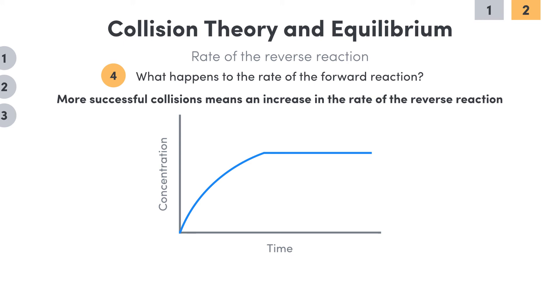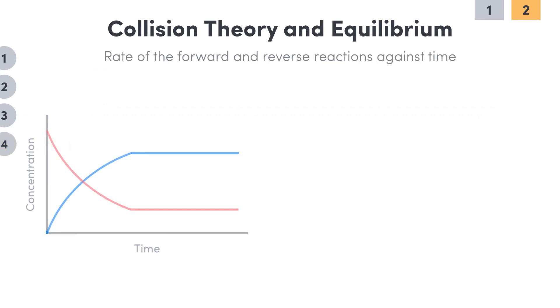Let's finish up by plotting the rates of the forward and reverse reactions against time. We'll put it side by side with the concentration plot so that you can relate the two. As you can see, the graph of the reaction rates over time actually looks super similar in shape to the concentration plot.